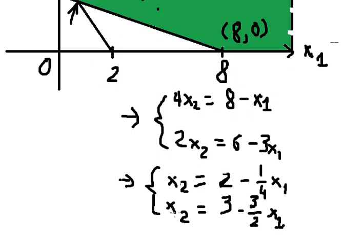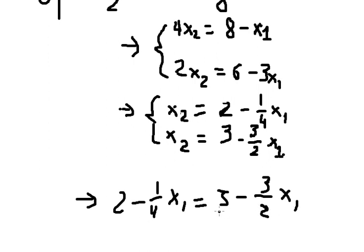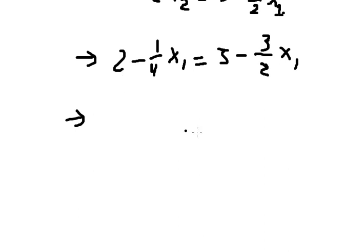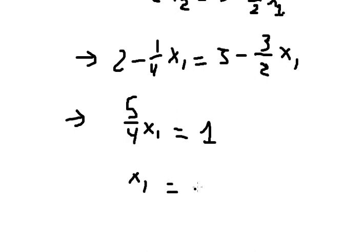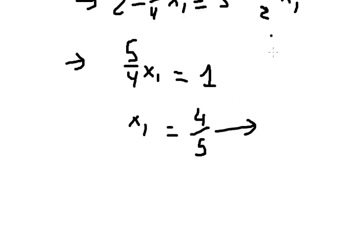We can see that both equations share the same s2 term, so we set them equal. Moving terms across, we get five over four times s1, and three minus two equals one. Dividing both sides by five over four gives s1 equals four over five. Substituting back into one of the equations gives s2 equals nine over five.